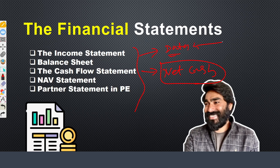Different teams feed data into financial statements: the fixed income team and dividend processing team update income statement data, while the trade processing team handles swaps, derivatives, options, loans, CLOs, and CDOs — that data flows into the balance sheet. Financial statements represent the aggregate value of all recorded transactions.